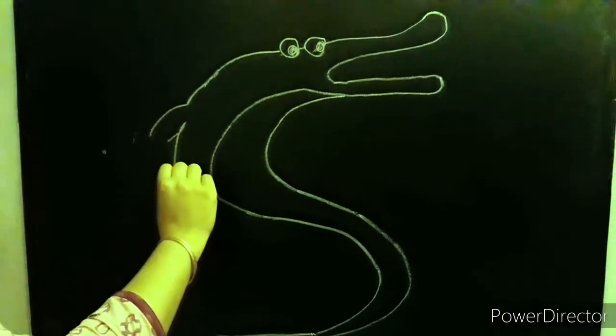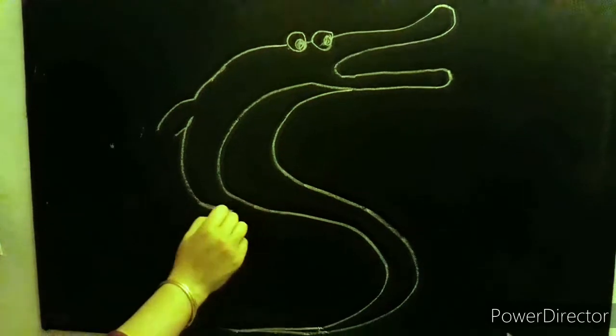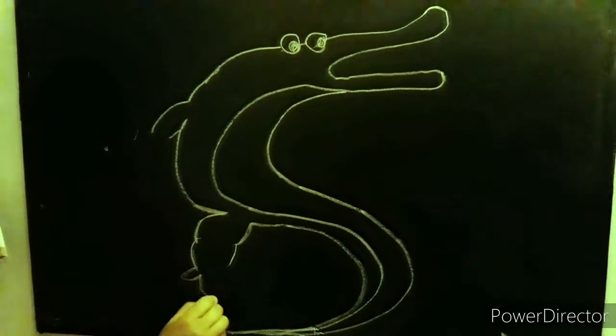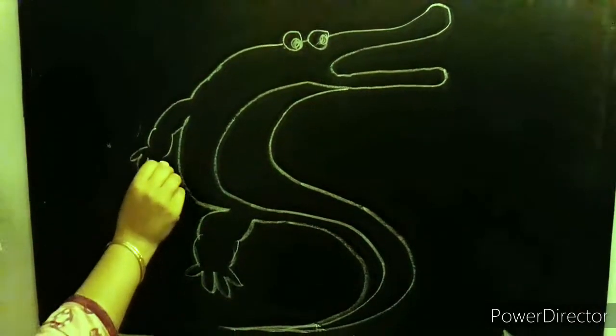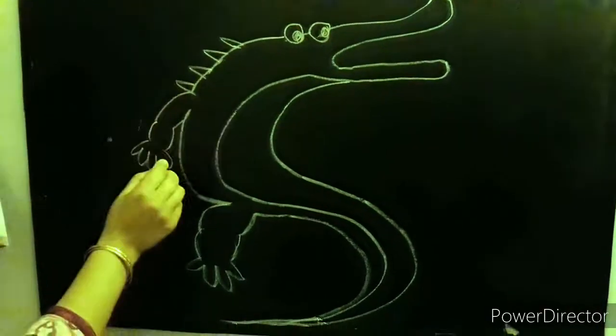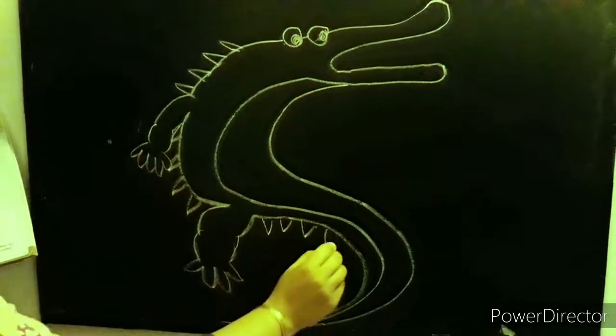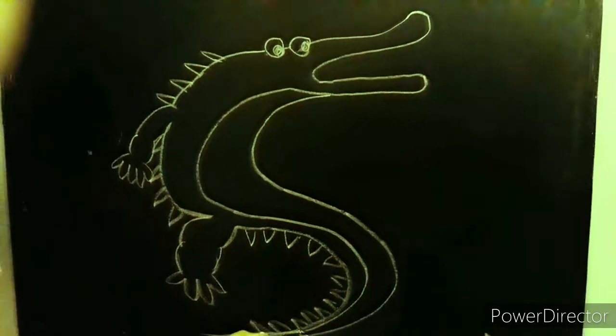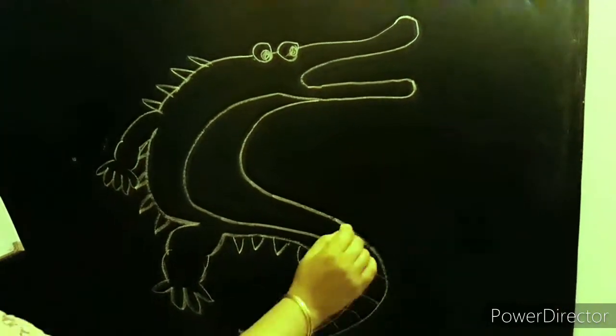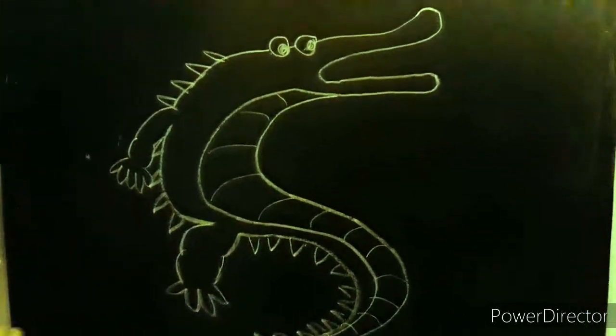How doth the little crocodile improve his shining tail and pour the waters of the Nile on every golden scale? How cheerfully he seems to grin, how neatly spreads his claws and welcomes little fishes in with gently smiling jaws.